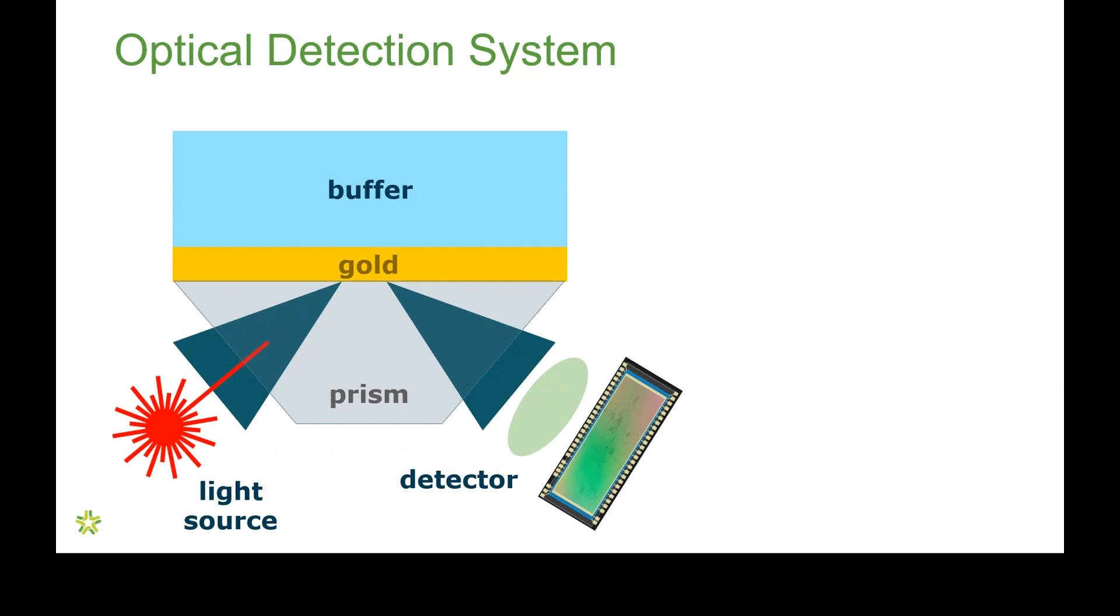This is the optical detection system for the Carterra LSA biosensor. The heart of this is the gold layer. On one side of the gold layer is buffer, through which we flow analyte, and ligand is attached to that gold layer. On the other side of the gold layer is a glass prism. Light is shown through the glass prism, and it's reflected and measured by a detector.